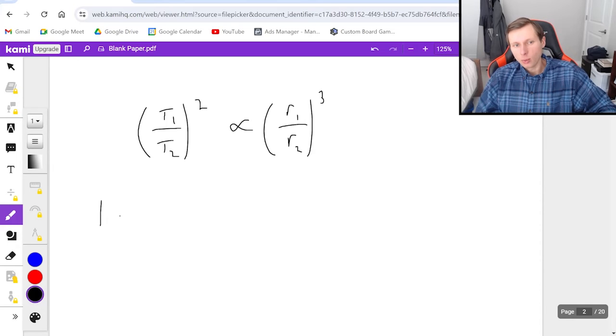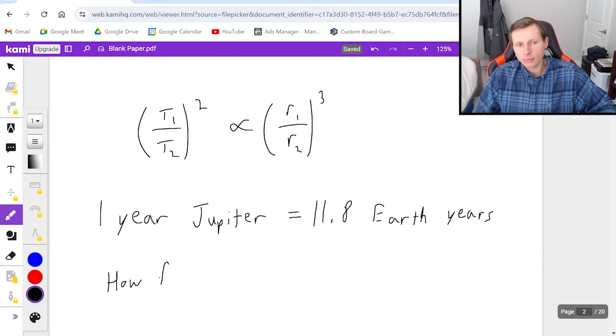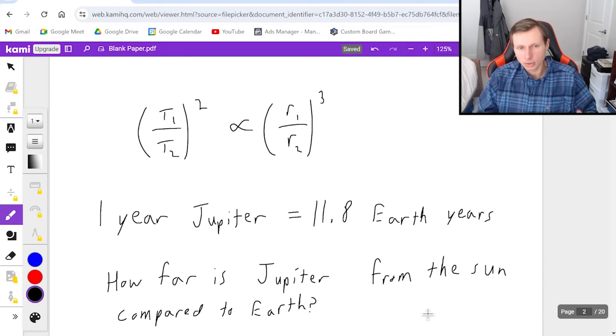So we know that one year on Jupiter—we know that's equal to 11.8 Earth years. And my question is, how far is Jupiter from the sun compared to Earth?